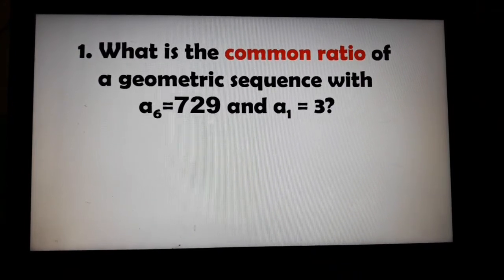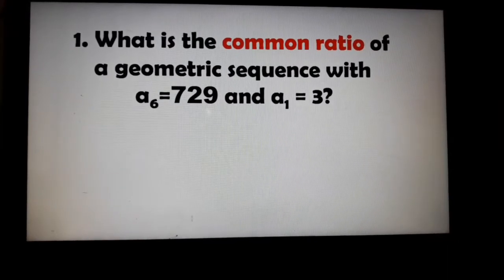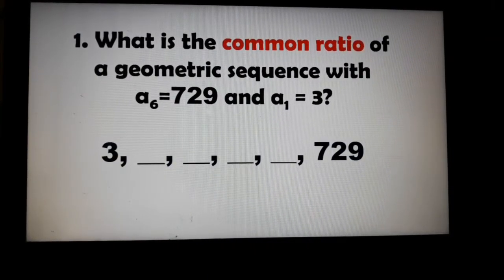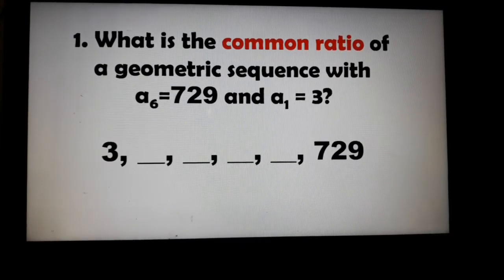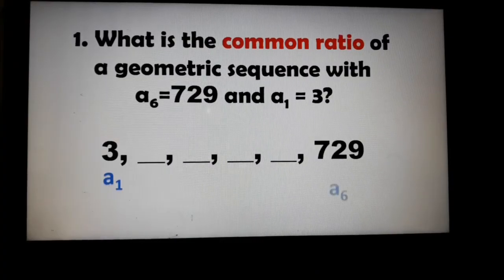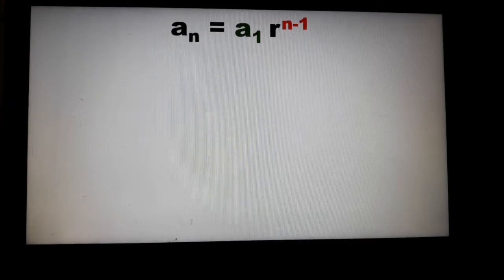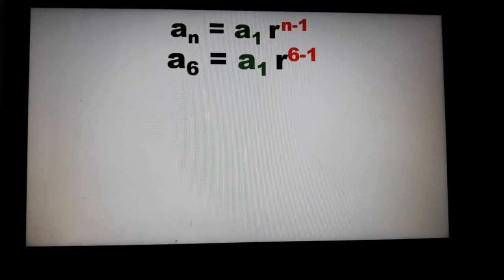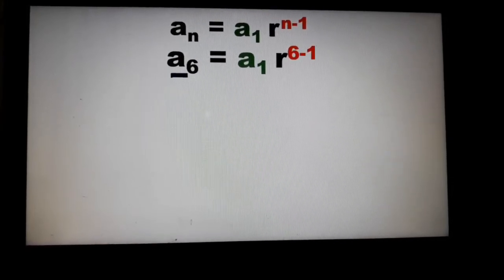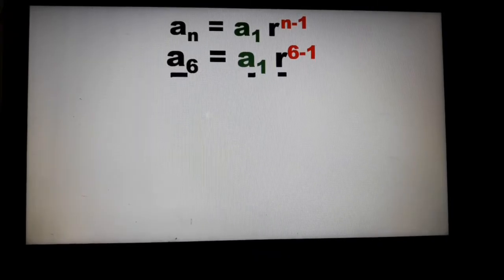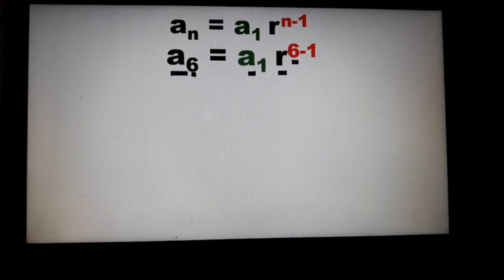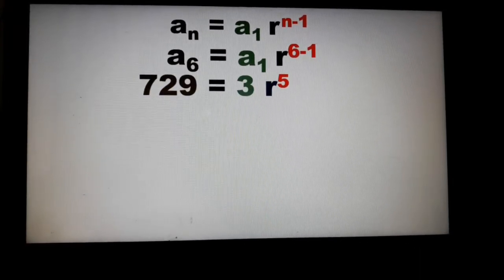Example number 1: What is the common ratio of a geometric sequence with a sub 6 equal to 729 and a sub 1 equal to 3? In this sequence, we only have 3 as the first term and 729 as the sixth term — there are no consecutive terms. So we cannot divide consecutive terms; we need to use the formula. The available information is a sub 6 and a sub 1, so a sub 6 is our last term, a sub 1 is our first term, and n is 6.